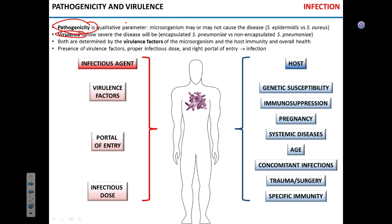Virulence is more of a quantitative characteristic which tells you how severe the disease will be. For example, Spanish flu can be more devastating than seasonal H3N2 because of certain arrangements of virulence factors. Similarly, vesicular stomatitis virus causes mild disease in humans, while rabies virus from the same family kills people. These two viruses have different virulence — they're both pathogenic and both cause disease, but the extent of the disease is different.